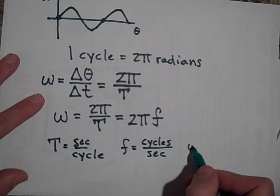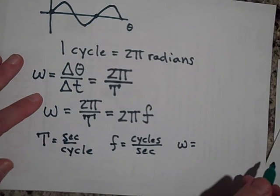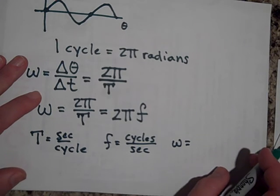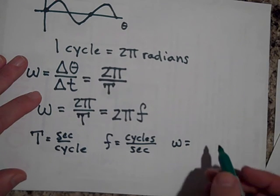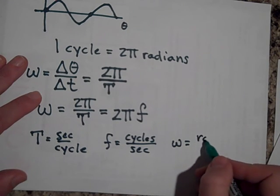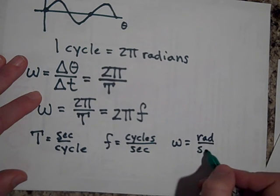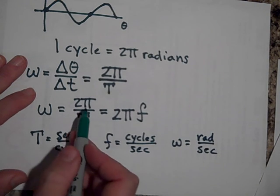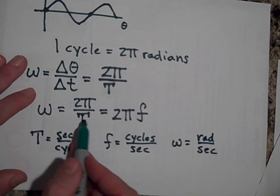What's the unit for ω? Angular frequency. It's not called angular velocity in simple harmonic motion, it's called angular frequency. And it's going to be radians per second. See how this gives you radians per second? And so does this.